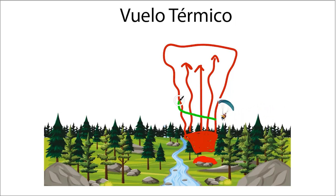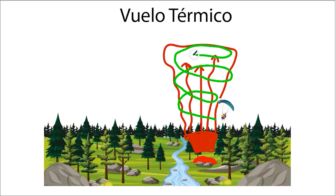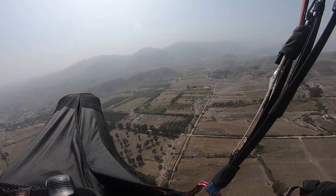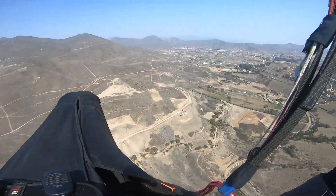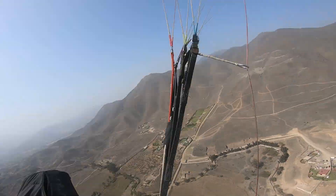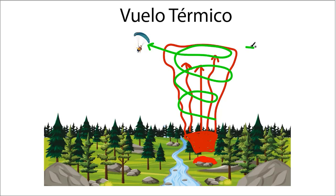Unlike ridge lift or dynamic flight, thermal flying tends to be more turbulent and bumpy. It's important to stay calm and understand that this is simply how thermal flight works. The advantage of this turbulence is that it allows us to gain a lot of altitude. A thermal can provide 100 meters, 500 meters, even 2,000 or 3,000 meters of height.